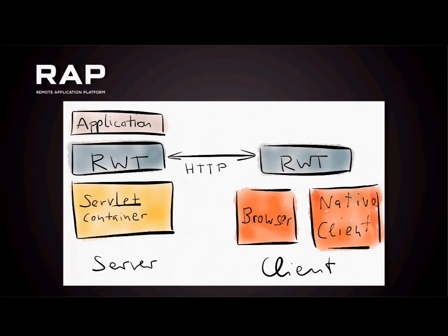RAP is a server-side technology. It's called Remote Application Platform. What we provide is a windowing toolkit — or widget toolkit — that is programmed against the Java API compatible with SWT. That's the main advantage: because everything is SWT compatible, you can take your already existing applications, move them to the server, and deliver them to a web browser or to a client. The application is written against RWT and runs in a servlet container, like every other web application — that can be a Tomcat, a Jetty, but also a WebSphere or JBoss server.